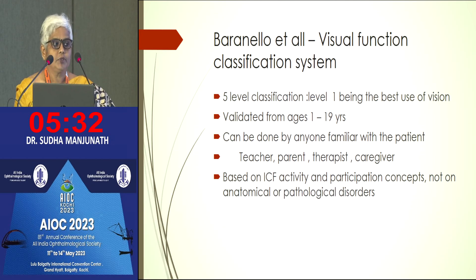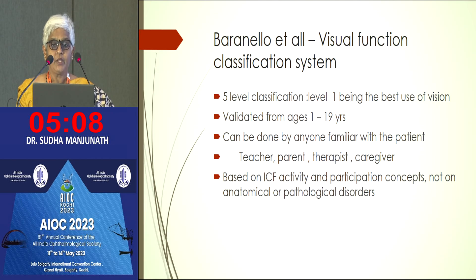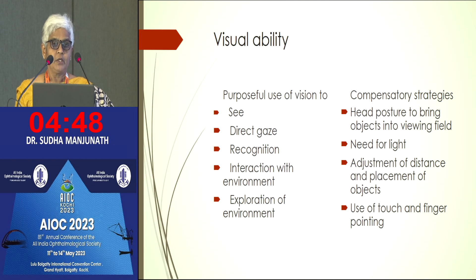People who work with children with disability know about classification systems based on function, like the Gross Motor Classification and Communication Functional Classification. We are a little late coming into functional classification for vision, but this has been remedied by Baranello and others, who have done a five-stage Visual Function Classification System based on ICF principles of activity and participation, not on pathology. Level one is easy and good use of vision; in level five, the child has no vision even in highly adapted environments. They define purposeful use of vision as to see, recognize, and interact, and what compensatory strategies children can use.